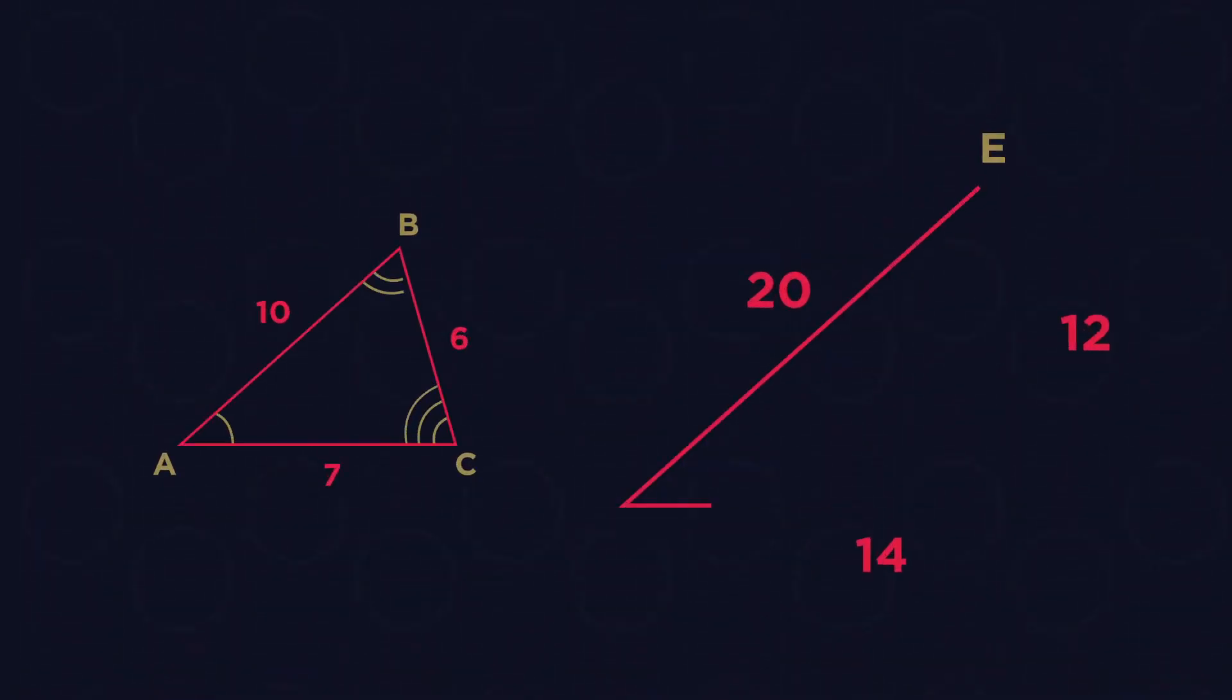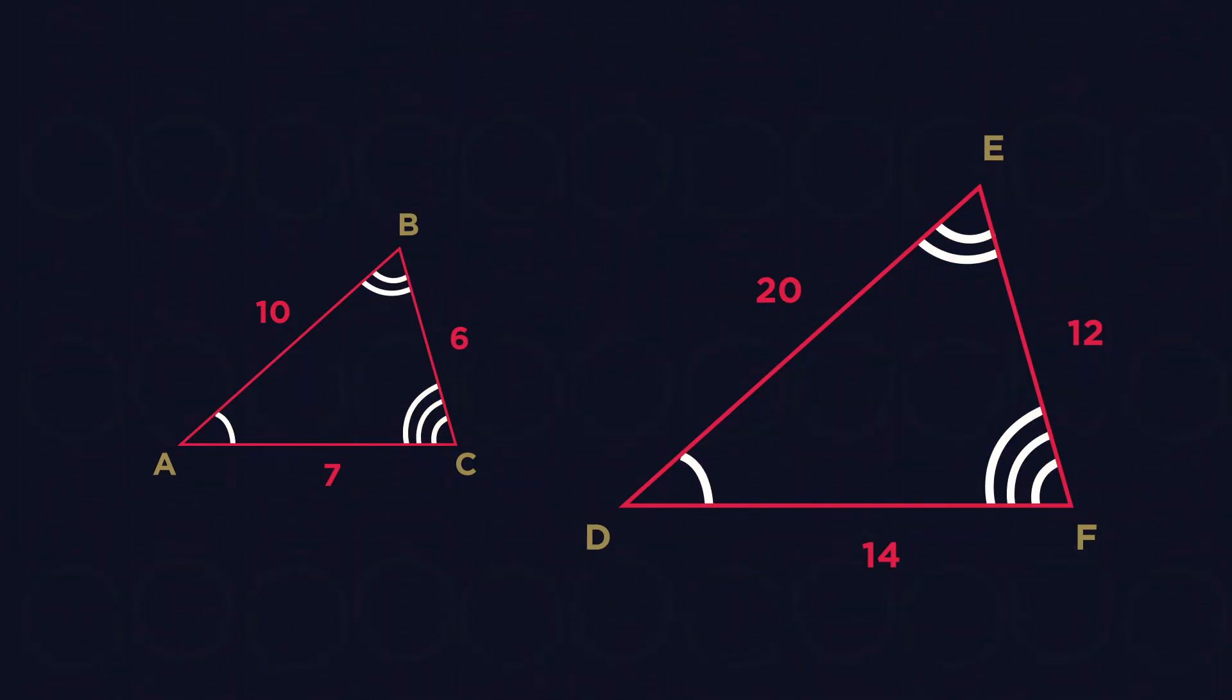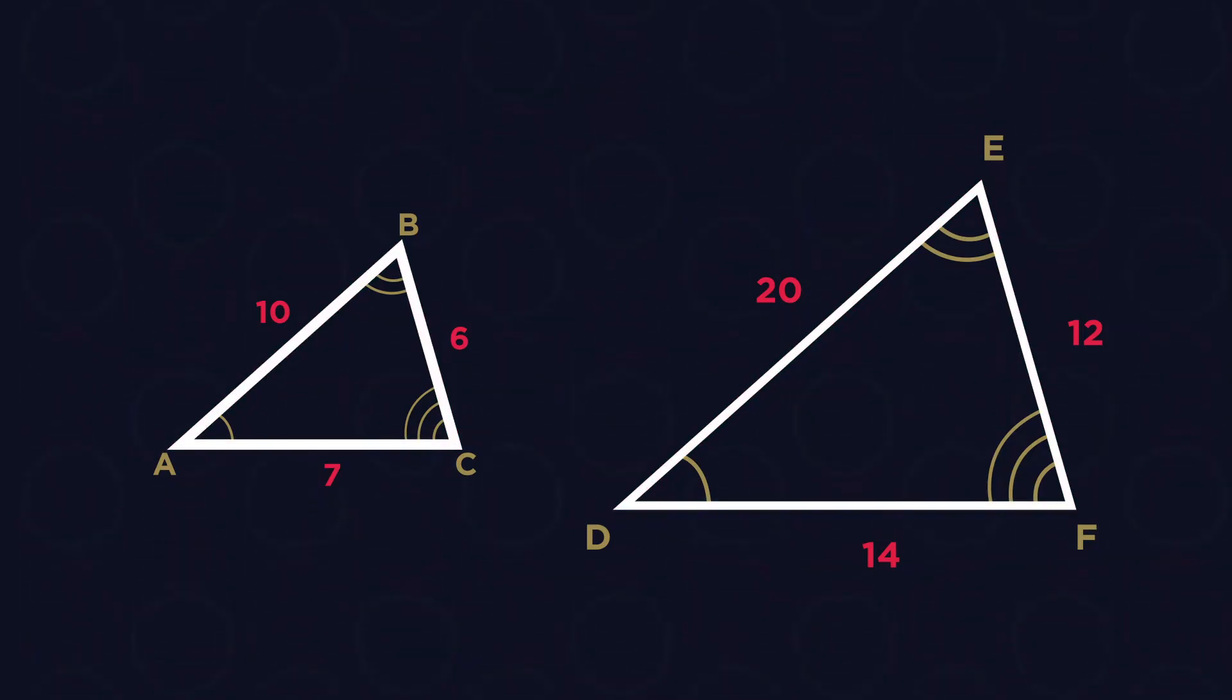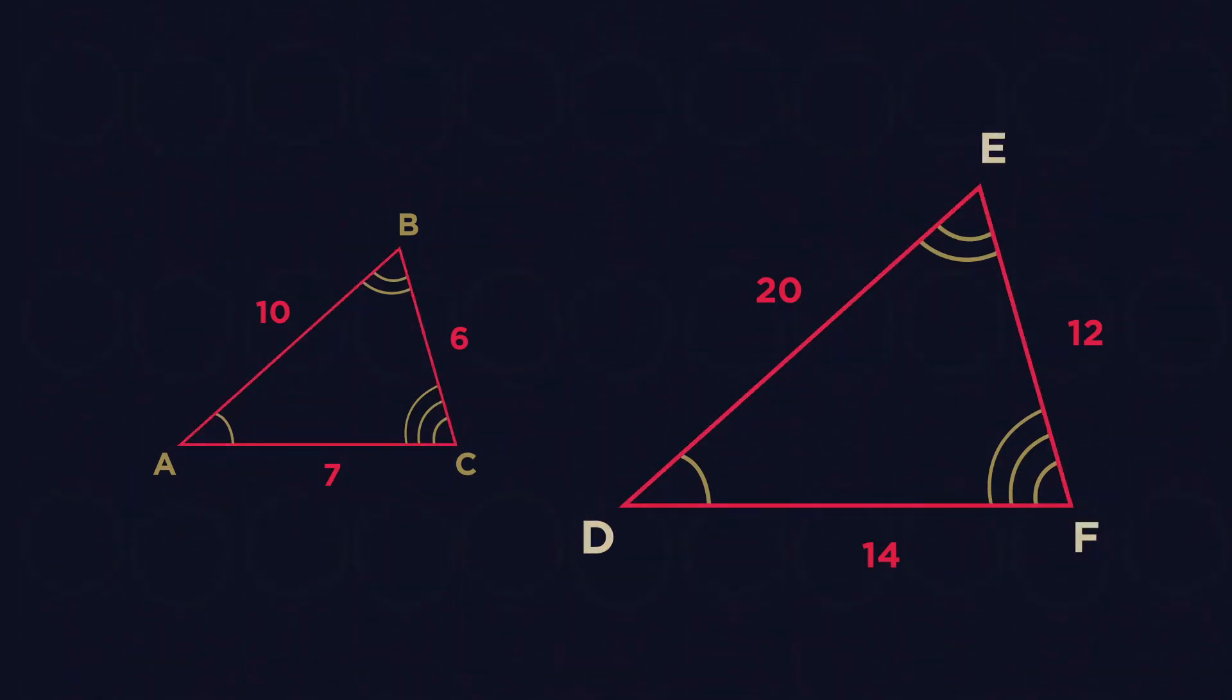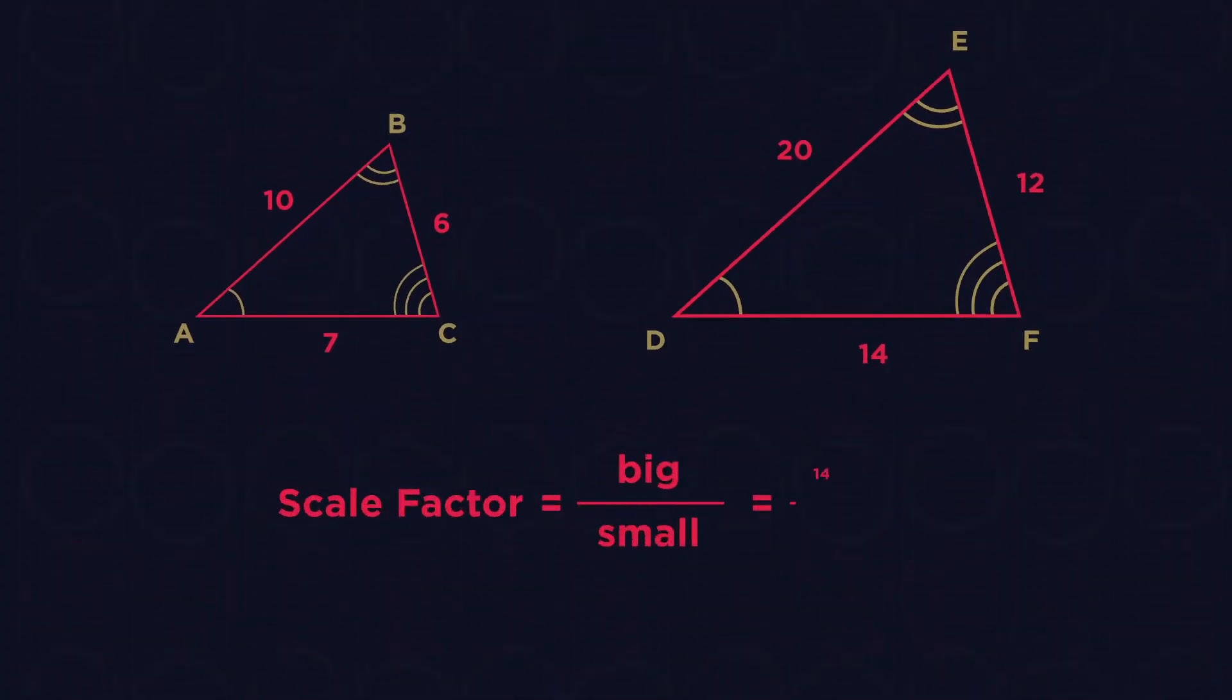Because similar shapes are just enlargements of one another, the corresponding angles are equal and the lines are in proportion. DEF is an enlargement of ABC. We can easily see that the scale factor is 2. To get the scale factor, we divide the larger length by its corresponding smaller length.